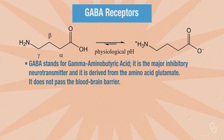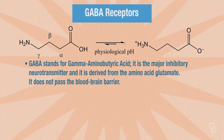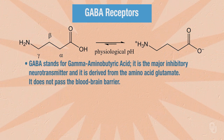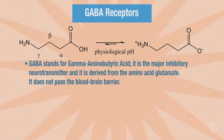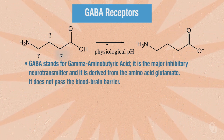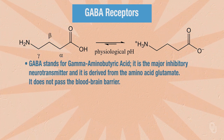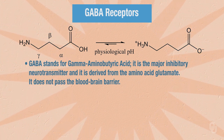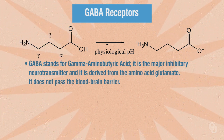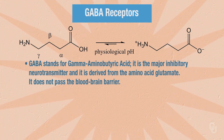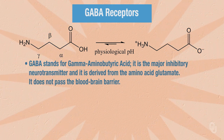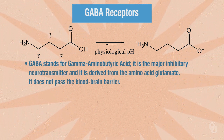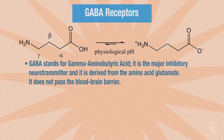You might wonder why this molecule is called GABA — gamma-aminobutyric acid. The reason reflects some historical baggage in biochemistry. The carbons are labeled alpha, beta, and gamma using an older nomenclature. Attached to the gamma carbon, we have an amino group. Because we have four carbons in the molecule, this is called butyric acid, and with the amino group attached to the gamma carbon, we get gamma-aminobutyric acid.